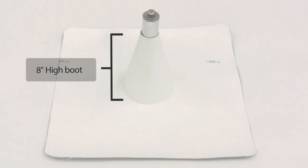Of course, this requires the use of a longer post. Quick Mount PV offers posts in 7, 9, and 12-inch lengths.